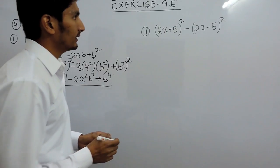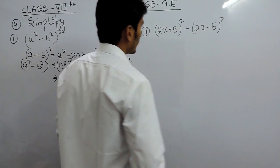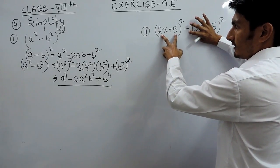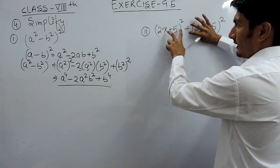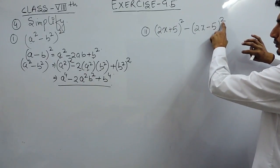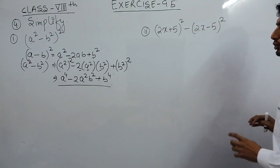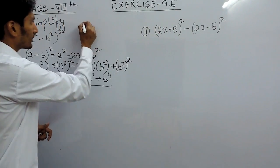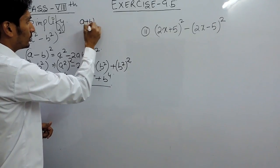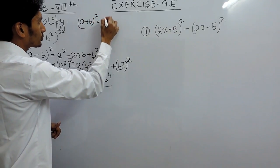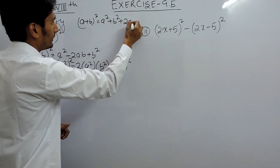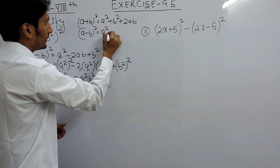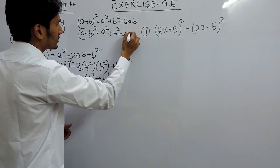Similarly, for the second expression: this is (a + b) whole square, and this is (a - b) whole square. So in this case I have to use two identities. The first is (a + b)² = a² + b² + 2ab, and the second is (a - b)² = a² + b² - 2ab.